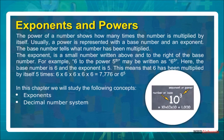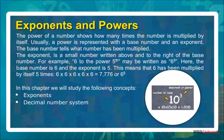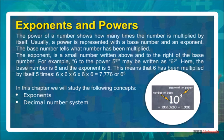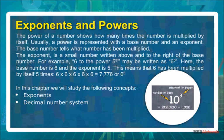The power of a number shows how many times the number is multiplied by itself. Usually, a power is represented with a base number and an exponent. The base number tells what number has been multiplied. The exponent is a small number written above and to the right of the base number. For example, 6 to the 5th power may be written as 6 to the power 5. Here, the base number is 6 and the exponent is 5.